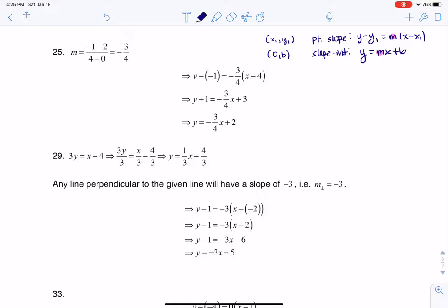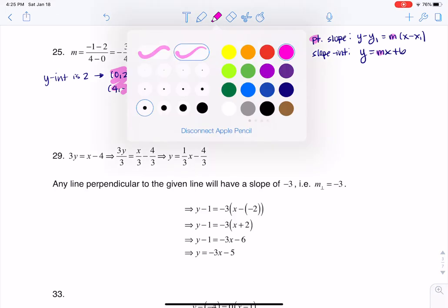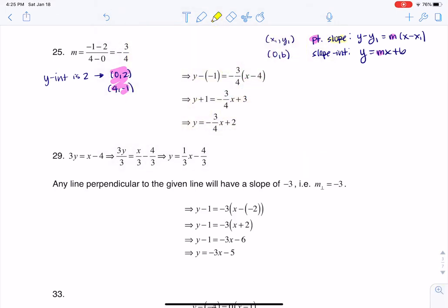If we take a look at what was given to us, it said the y-intercept was 2 and the other point was 4, negative 1. If the y-intercept is 2, that means the ordered pair is 0, 2. Now the other ordered pair they gave me was 4, negative 1. If I want to use point-slope, I have the points—I actually have two points here—but what I don't have and what I need is the slope.